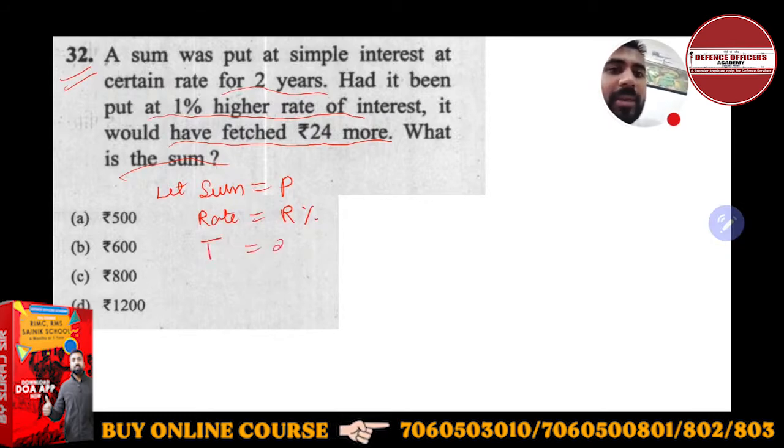Now what is he saying? Had it been put at 1% higher rate of interest, it would have fetched 24 rupees more. So first, let's take interest from here. How much interest will be? SI is equal to P × R × T / 100. This is the formula.